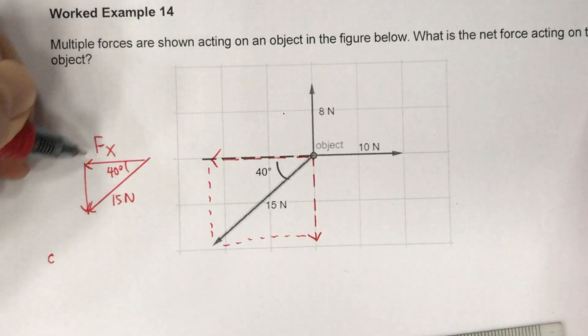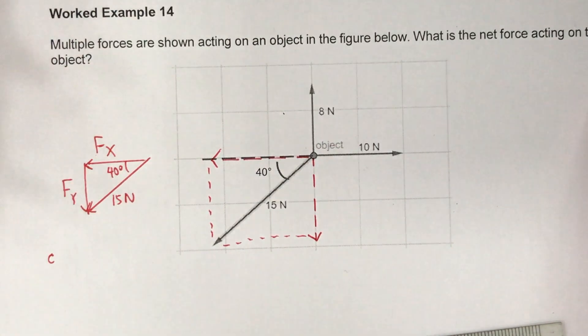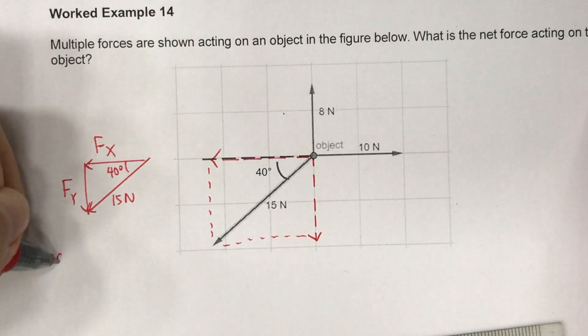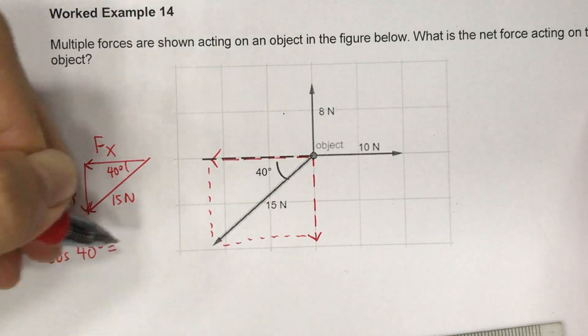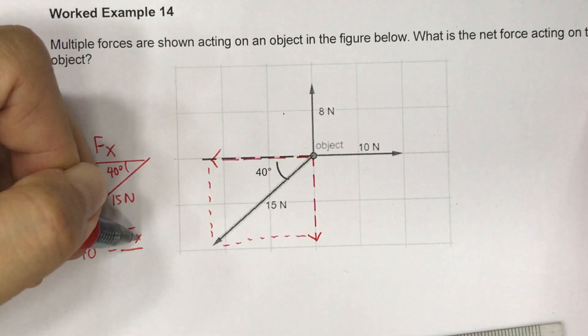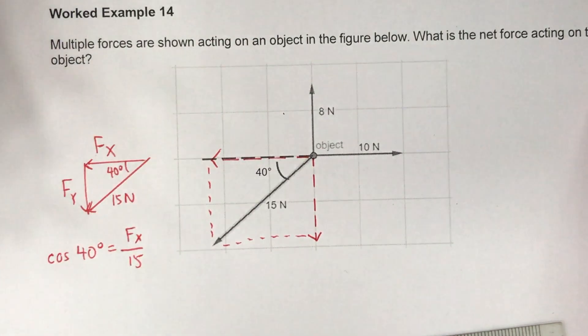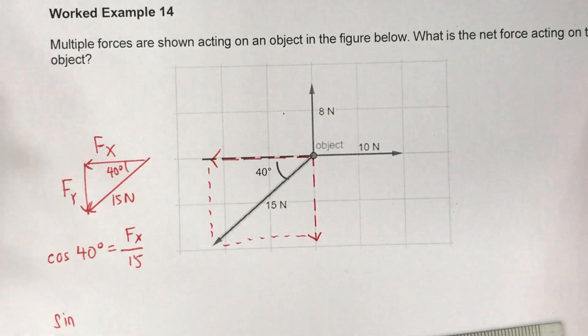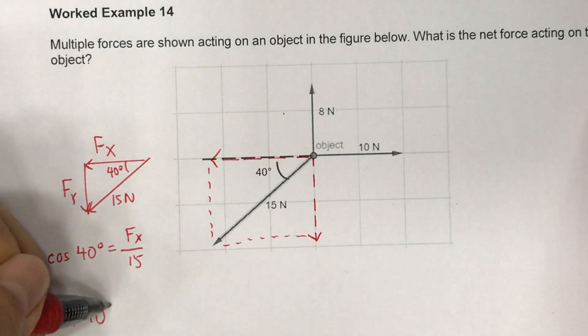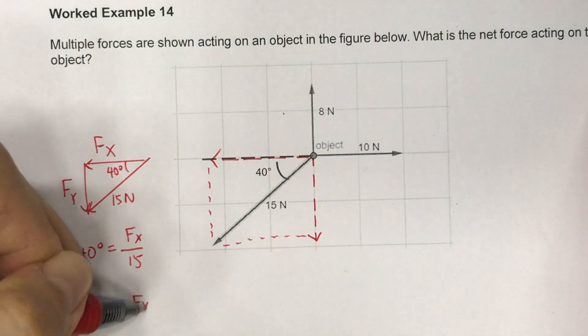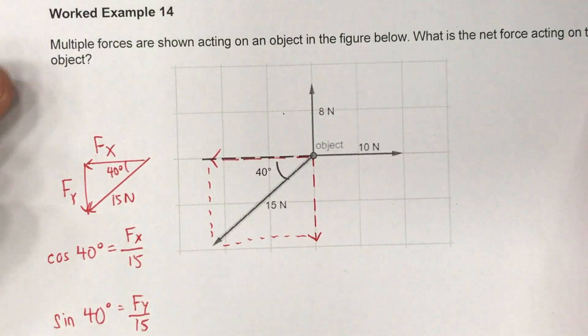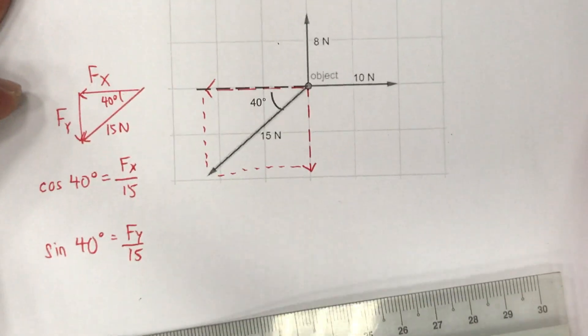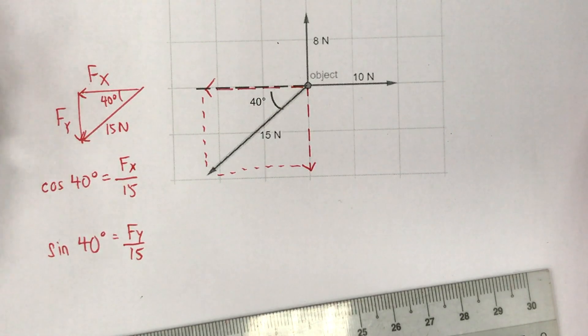So fx will be the side that's adjacent to the 40 degrees, and fy will be the side that's opposite to the 40 degrees. We can find the magnitude of fx by taking cosine 40 equals fx over the hypotenuse. And then fy is the ratio of the length of the opposite side over the length of the hypotenuse.